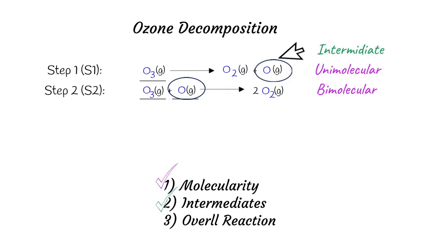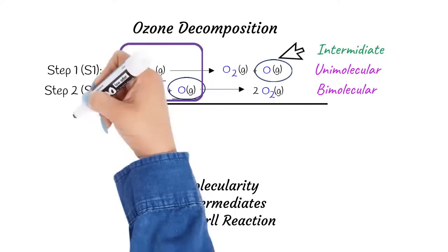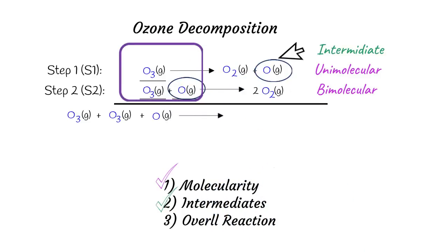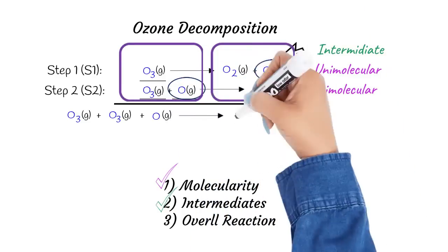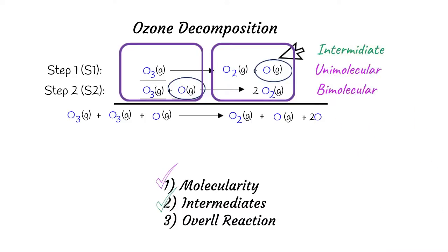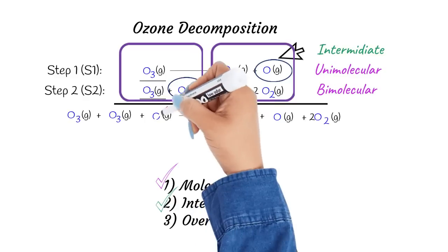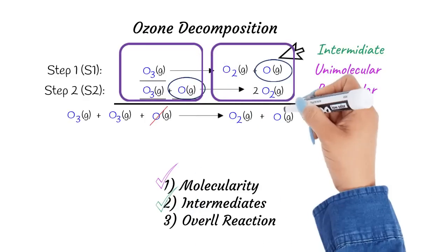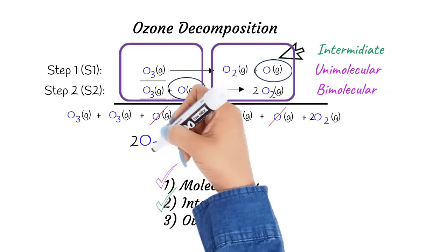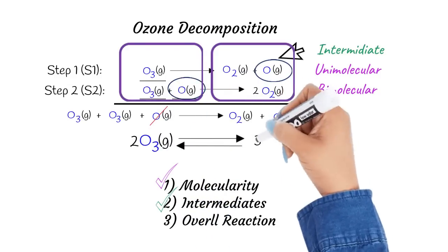Now let's add up the two elementary steps to get the overall reaction. When we put all the reactants on the reactant side, we get two O3 molecules and an O. On the product side we get O2, one O, and two O2 molecules. We can cancel out O because it appears on both sides of the equation, and we are left with two O3 molecules on the reactant side and three O2 molecules on the product side. Therefore our overall reaction is 2O3 → 3O2.